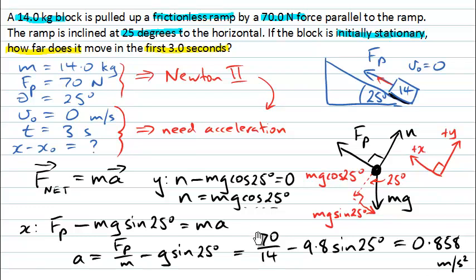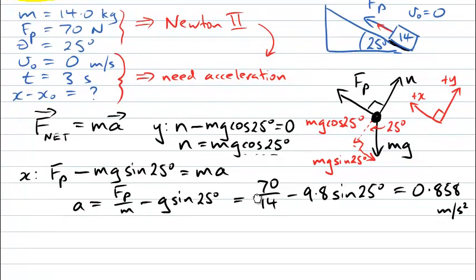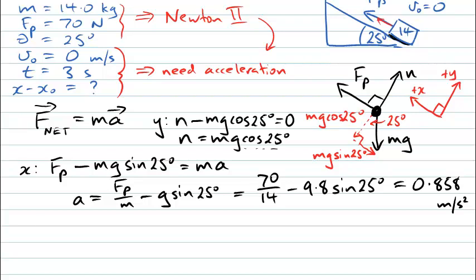So now I know the acceleration. What if I move my page up a bit here to give myself some more space to work? I can now use my equations of motion for constant acceleration to say that my change in displacement here must be equal to my initial velocity multiplied by time plus a half the acceleration multiplied by the square of the time. Now I can put all the numbers that I know here. My initial velocity was zero. So I've got a half times the acceleration, which is 0.858 times the square of the time, which was three seconds. So there's my three squared. And I can put those numbers into my calculator. And I'll find an answer here of 3.86 metres.